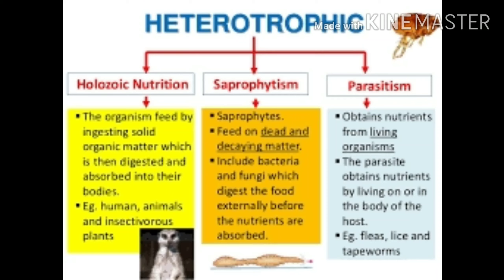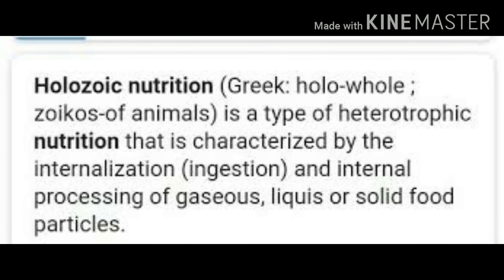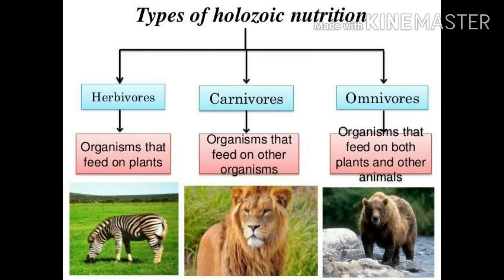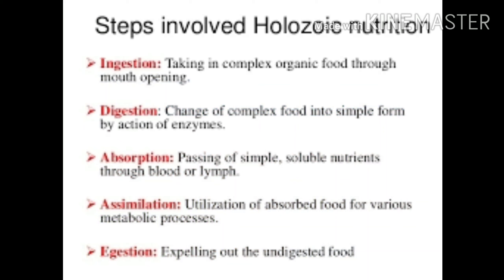Heterotrophic nutrition is subdivided into three types: holozoic nutrition, saprophytic nutrition, and parasitic nutrition. Holozoic is a Greek word — holo means whole, zoicos means of animals. So in this type of nutrition, the organism takes its food, whether solid or liquid, as a whole. This food is used to release energy by a series of chemical reactions in the body. Holozoic nutrition is again subdivided into herbivores, carnivores, and omnivores.